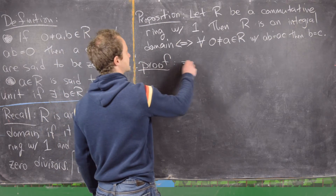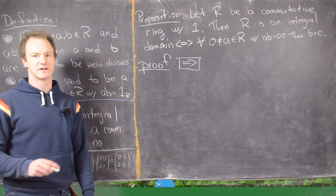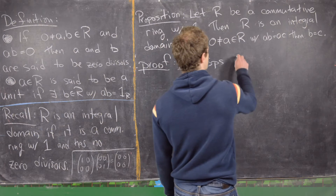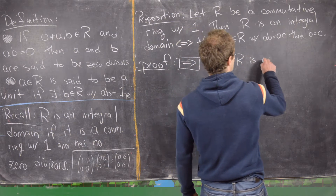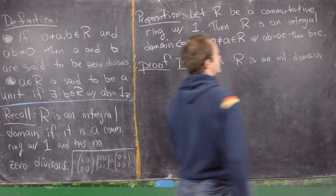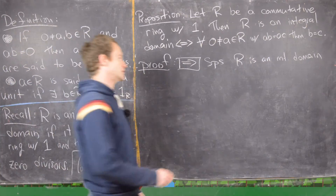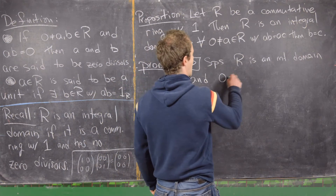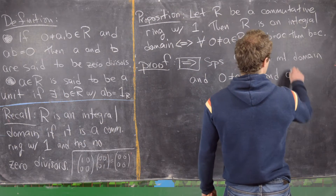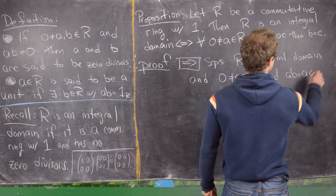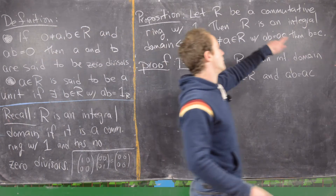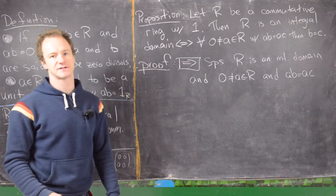This is an if-and-only-if statement, so we have two directions to prove. For the forward direction, suppose that R is an integral domain. We also assume A is not equal to zero in R and that AB equals AC. Our goal is to prove that B equals C.